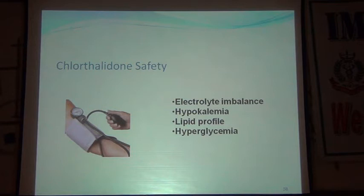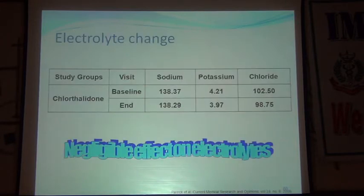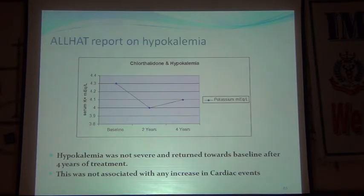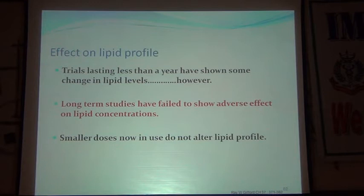Regarding safety: we are concerned about diuretics causing hypokalemia, dyslipidemia, and hyperglycemia. However with low doses of chlorthalidone, sodium remains stable at 138 throughout. Potassium drops only minimally, from 4.2 to 3.9 — a negligible change. At the end of 4 years, potassium slowly returns to baseline. Hypokalemia is not severe and returns to baseline after 3-4 years.